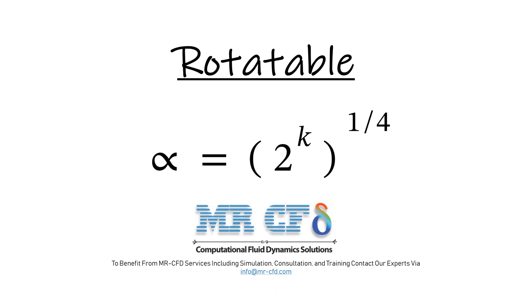To calculate the value of alpha in the rotatable design model, the following formula must be used, in which k represents the number of input parameters or factors. Thus, the value of alpha for the two-factor model is 1.414, for the three-factor model is 1.681, for the four-factor model is 2, and so on.